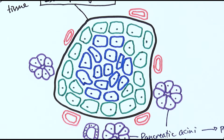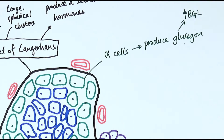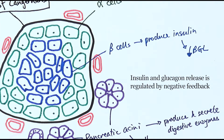There are two main types of cells in the islet of Langerhans that you need to be aware of. The first ones, labeled in green, are called alpha cells. Alpha cells produce glucagon, which is a hormone used to increase our blood glucose level. The other ones are called beta cells and they can produce insulin to decrease our blood glucose level.